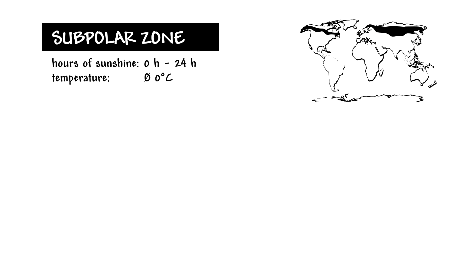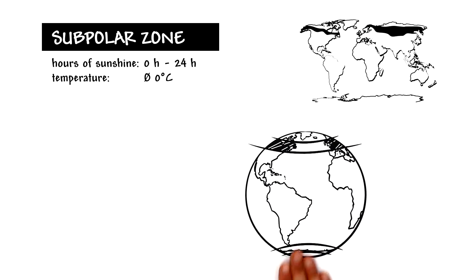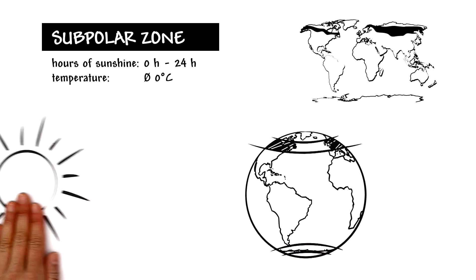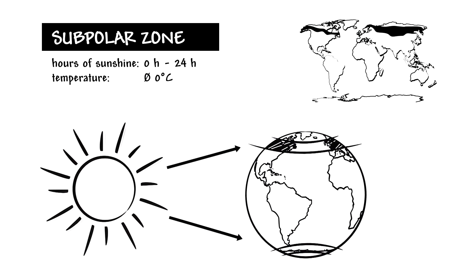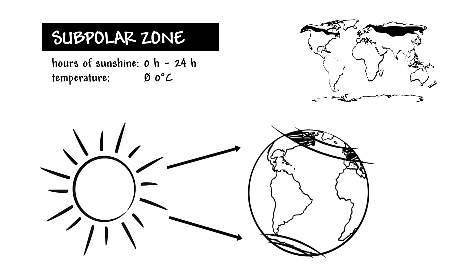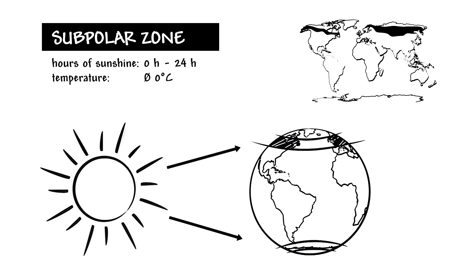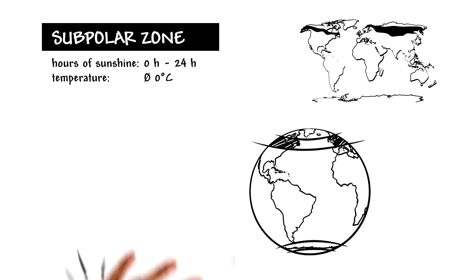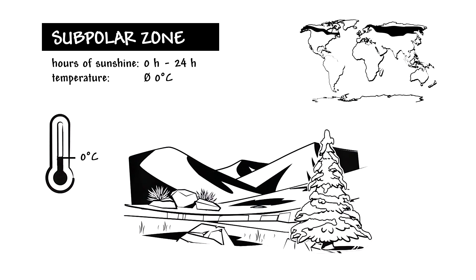With the subpolar zone, we move farther still from the equator. Sunlight hits the earth at a very shallow angle here, which is why the days in summer can be extremely long. Temperatures are typically just above freezing, and there is lots of precipitation.